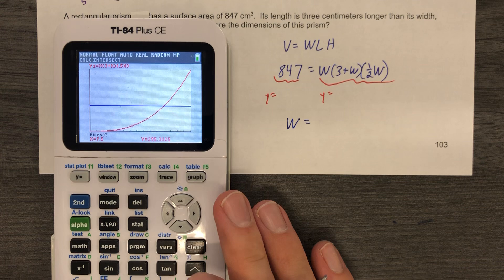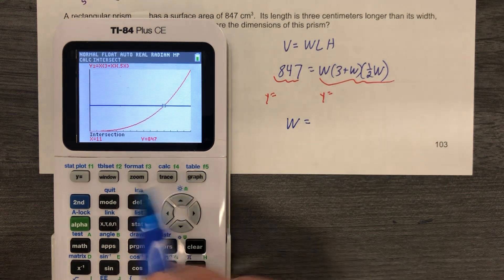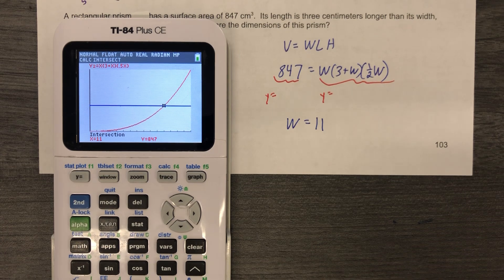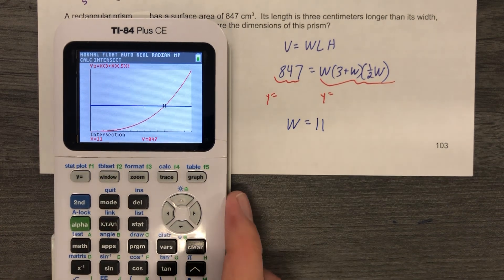I'm going to find a point of intersection. You can ignore all the things I'm typing. But I got 11. X equals 11, which really means W is 11, right? Because W is X in what we're dealing with in terms of the technology.